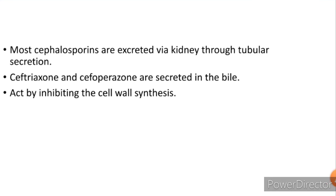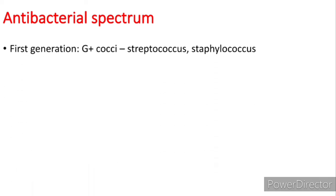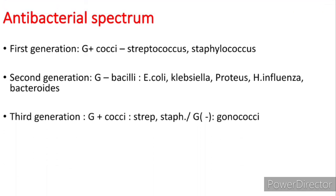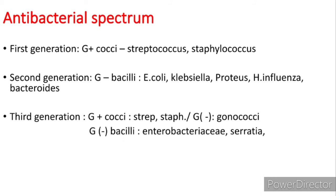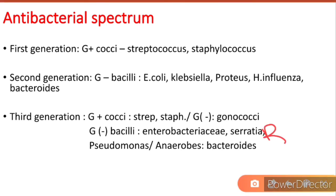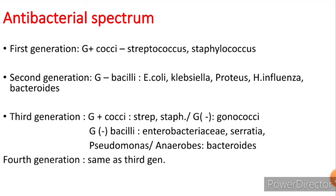Cephalosporins act by inhibiting cell wall synthesis, just like penicillins. Regarding antibacterial spectrum: first generation acts against gram-positive organisms. Second generation is less active against gram-positive organisms than first generation agents, but has extended gram-negative coverage. Third generation drugs are active against gram-negative organisms resistant to beta-lactam antibiotics and can also penetrate the blood-brain barrier — remember this. Fourth generation is the same as third generation.